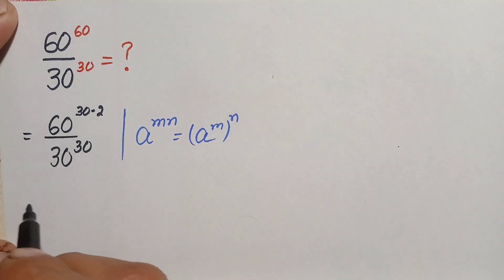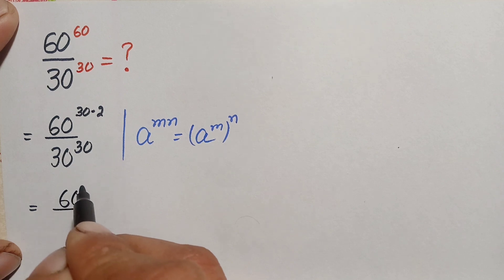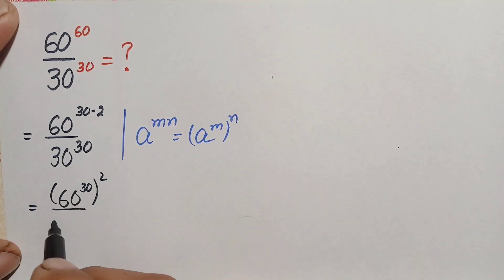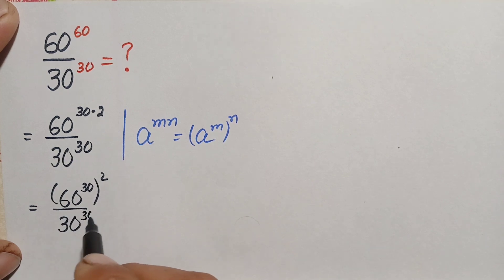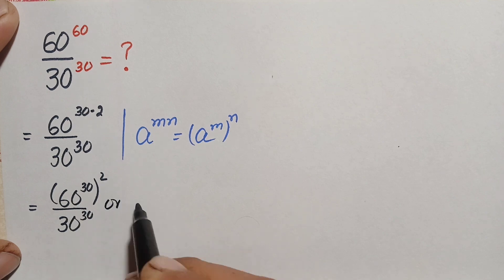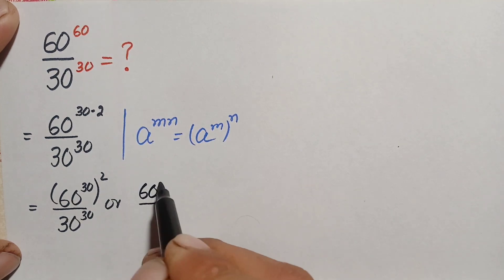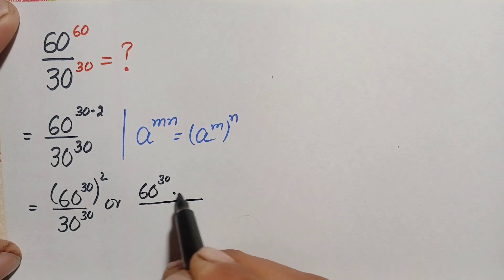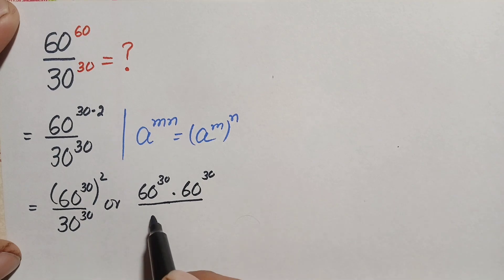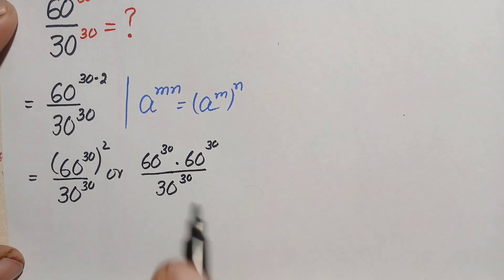Using this identity, the numerator becomes 60 raised to power 30, all raised to power 2, divided by 30 raised to power 30. Since there is a square over this number, we can write it as 60 raised to power 30 times 60 raised to power 30, divided by 30 raised to power 30.